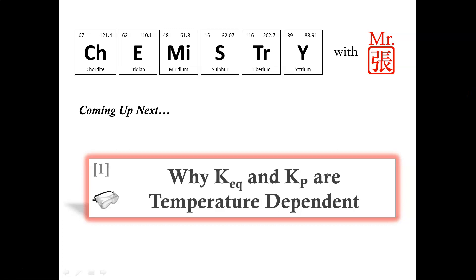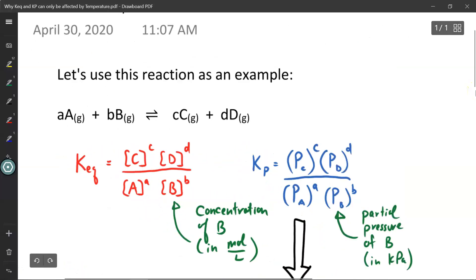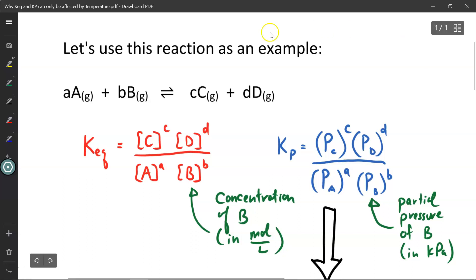In this video tutorial we will discuss why Keq and Kp are temperature dependent. Let's use this example. We have reactant A, reactant B, product C and product D. They are all gases. The lowercase letters represent coefficients, which we can get by balancing the equation itself.